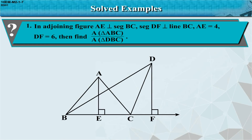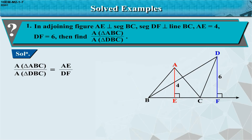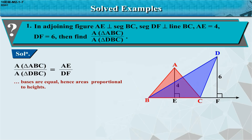Example 1: In the adjoining figure, AE is perpendicular to segment BC and segment DF is perpendicular to line BC. AE = 4 and DF = 6. Find area of triangle ABC / area of triangle DBC. Solution: Area of triangle ABC / area of triangle DBC = AE / DF, since bases are equal and areas are proportional to heights. = 4/6 = 2/3.